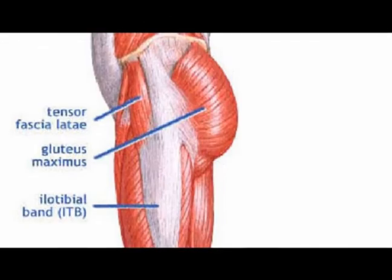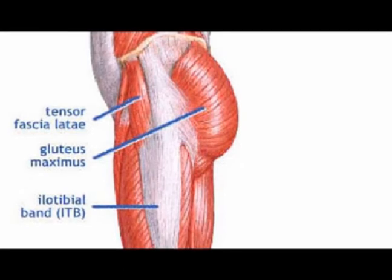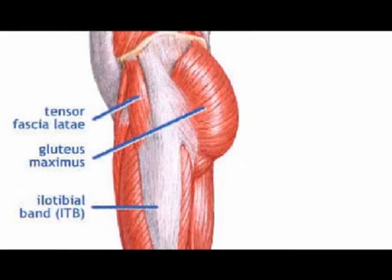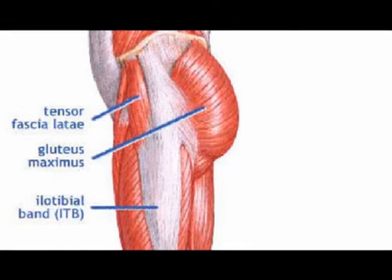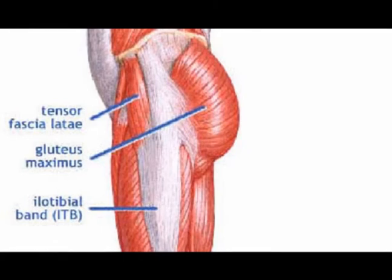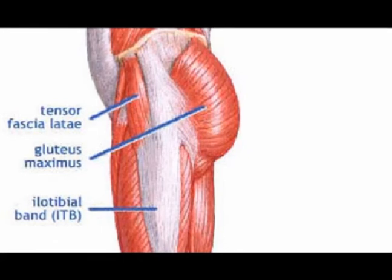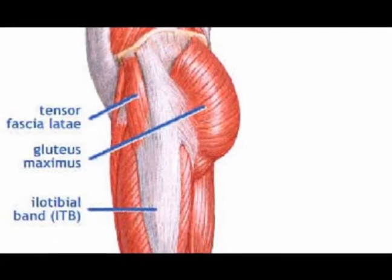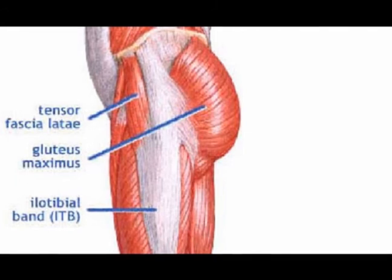The iliotibial band has the tensile strength of soft steel and has very few, if any, stretch receptors. It serves as the attachment point for the tensor fasciae latae muscle and also the attachment point for the gluteus maximus muscle.